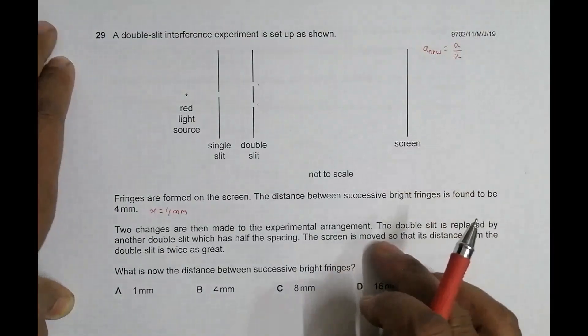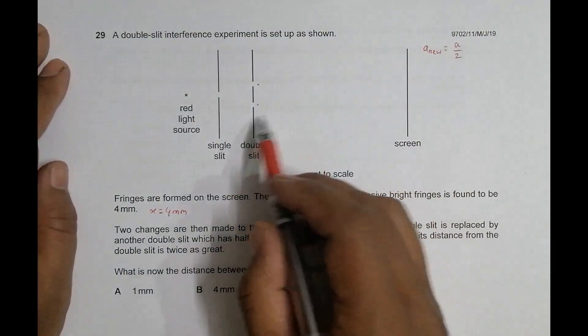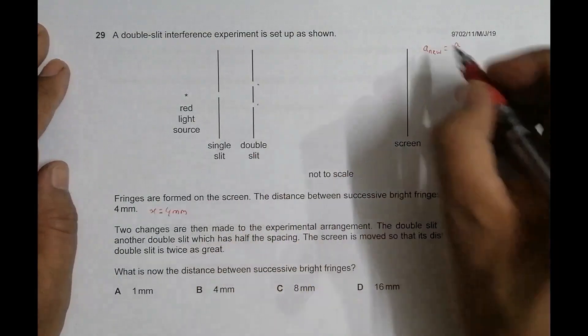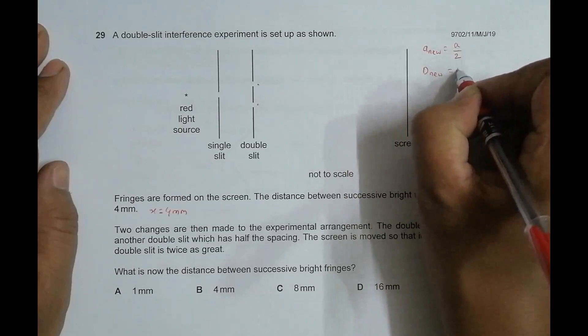The screen is moved so that its distance from the double slit is twice as great. So that means now this distance is also increased to twice, so we have D_new is equal to 2D.